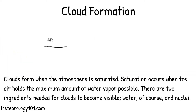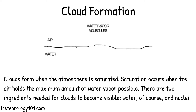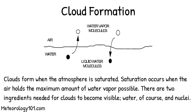Clouds form when the atmosphere is saturated. Saturation occurs when the air holds the maximum amount of water vapor possible. There are two ingredients needed for clouds to become visible: water and nuclei.